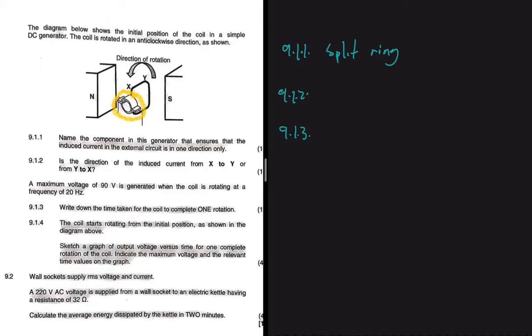Let's write down the time taken for the coil to complete one rotation. So we have frequency being equals to 1 divided by the period. If we rearrange this formula we should get the period being equals to 1 divided by the frequency. So this should be 1 divided by 20, and if I put that in my calculator I'm getting 0.05 seconds.